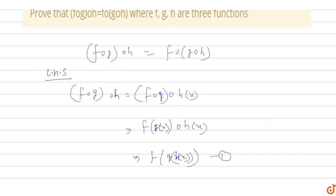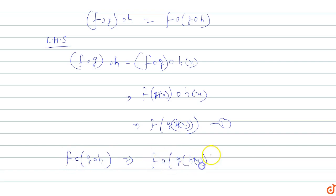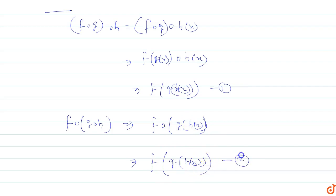Now for the RHS: (f∘g)∘h(x). Applying h first gives h(x), then g∘h applied gives g(h(x)), so f∘g of h(x) equals f(g(h(x))). This is our equation for the RHS.